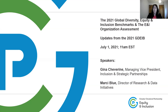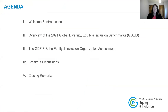I'm going to jump over to our agenda quickly so we can talk through what to expect. First, Tina is going to review an overview of the 2021 Global Diversity, Equity, and Inclusion Benchmarks Model. Then we will talk about how this GDEIB model connects to our equity and inclusion organization assessment. Lastly, we will break into small groups for discussion, and then come back for closing remarks at the end of the session.